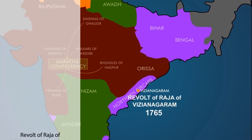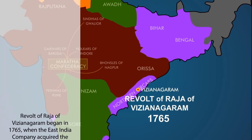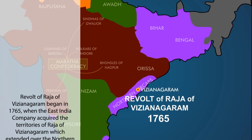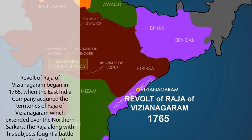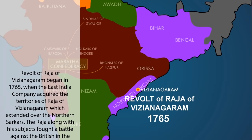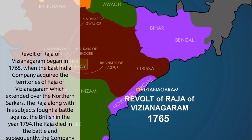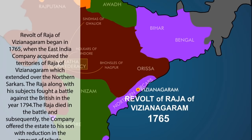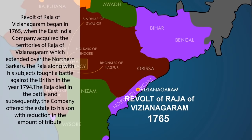The Revolt of the Raja of Vijayanagaram began in 1765 when the East India Company acquired the territories of the Raja of Vijayanagaram, which extended over the northern Sarkars. The Raja along with his subjects fought a battle against the British in the year 1794. The Raja died in the battle and subsequently the company offered the estate to his son with a reduction in the amount of tribute.